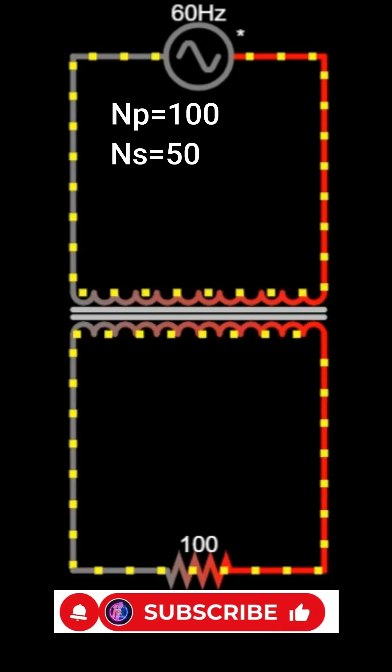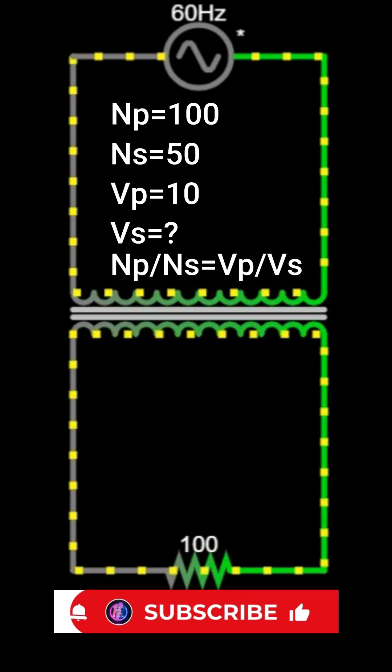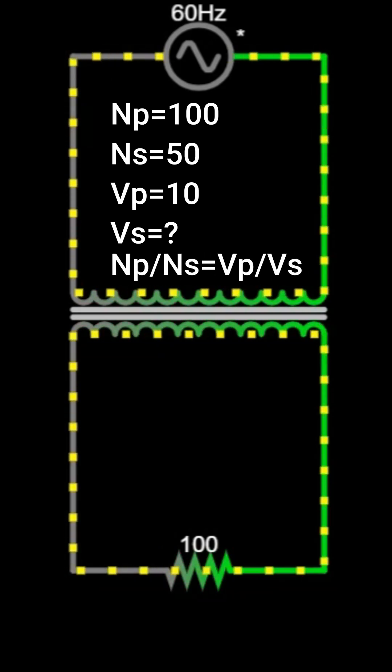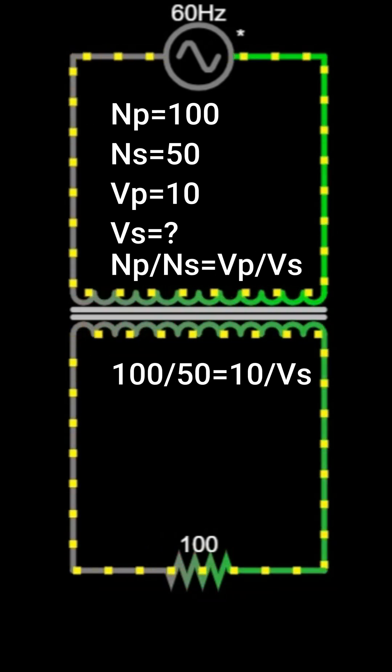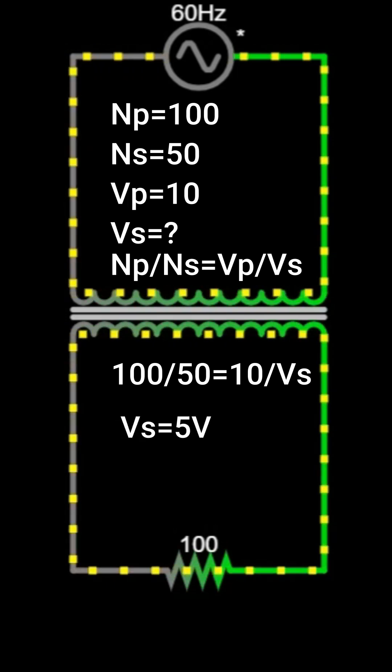If the input voltage is 10 volts, we can calculate the output voltage. Np over Ns equals Vp over Vs. That is 100 divided by 50 equals 10 divided by Vs. So Vs equals 5 volts.